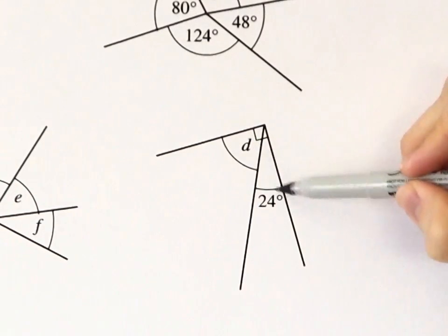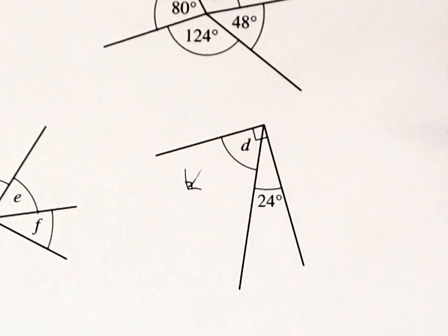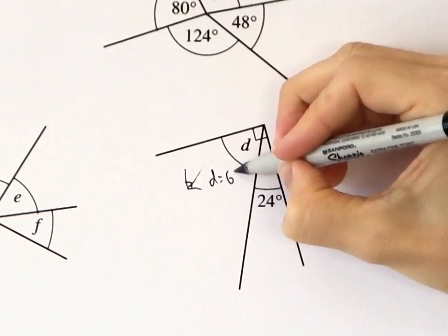These two angles are inside a right angle, so they're complementary. They add to 90 degrees. So D must be 66 degrees.